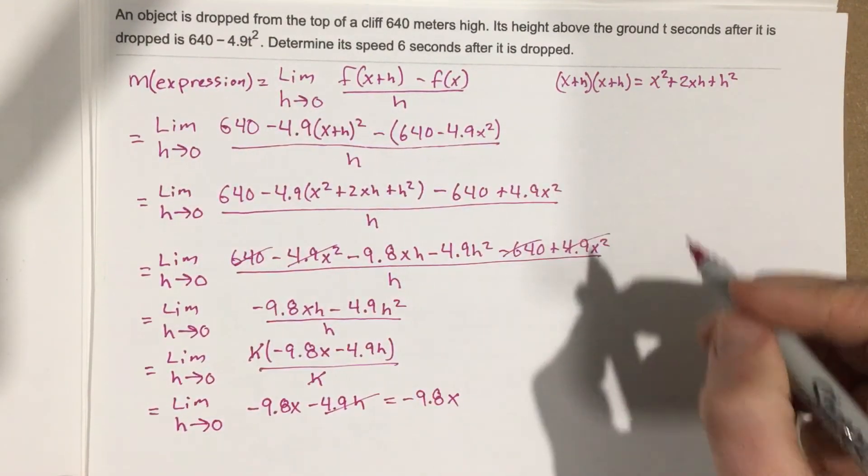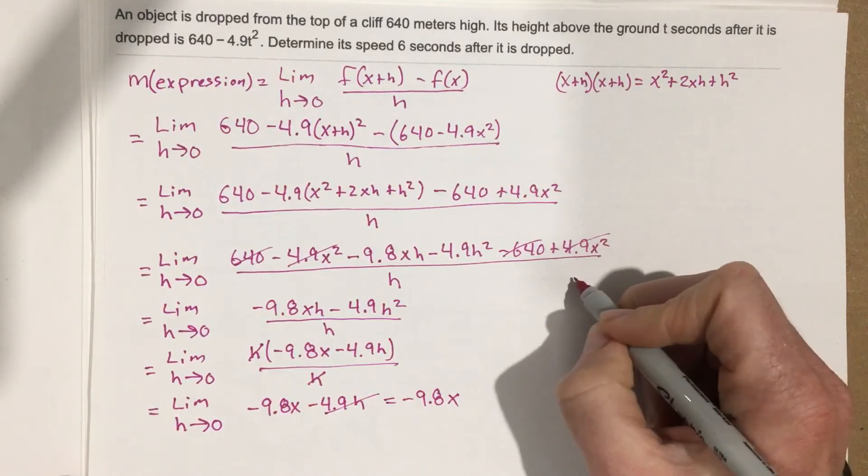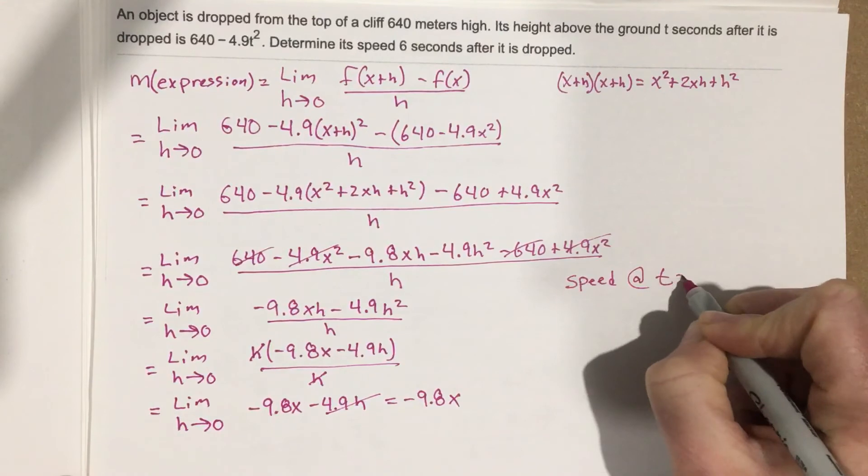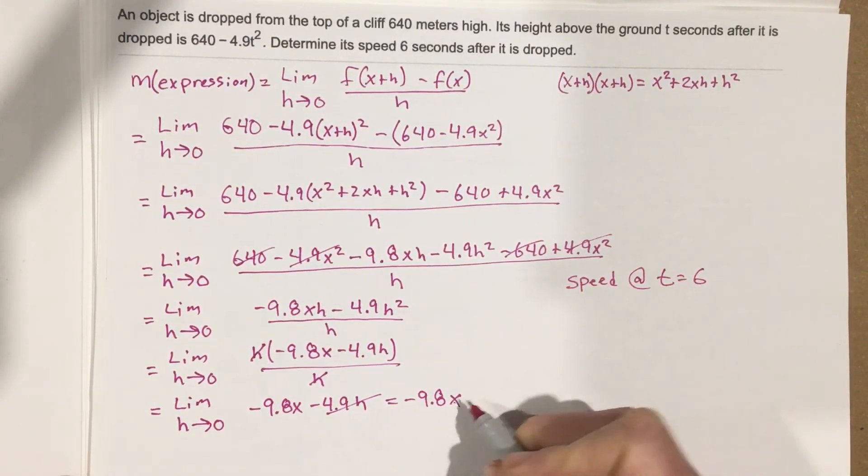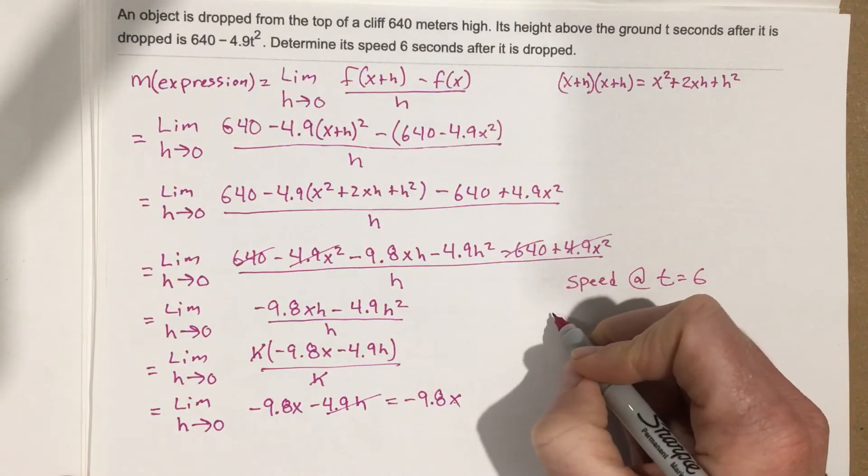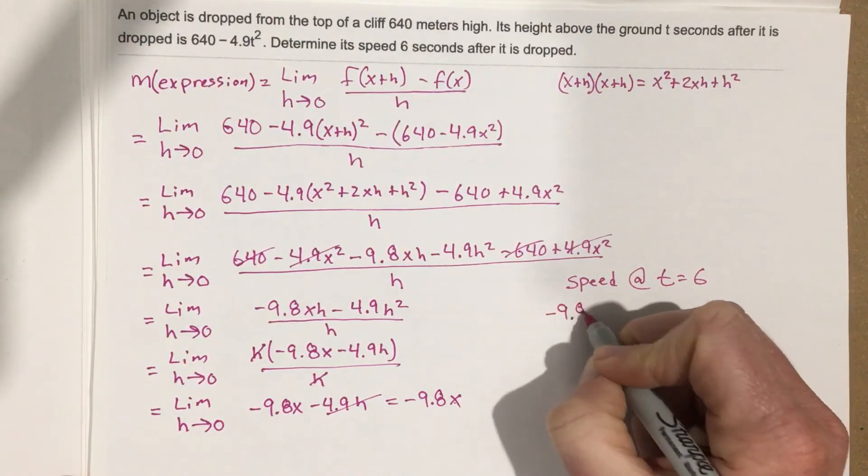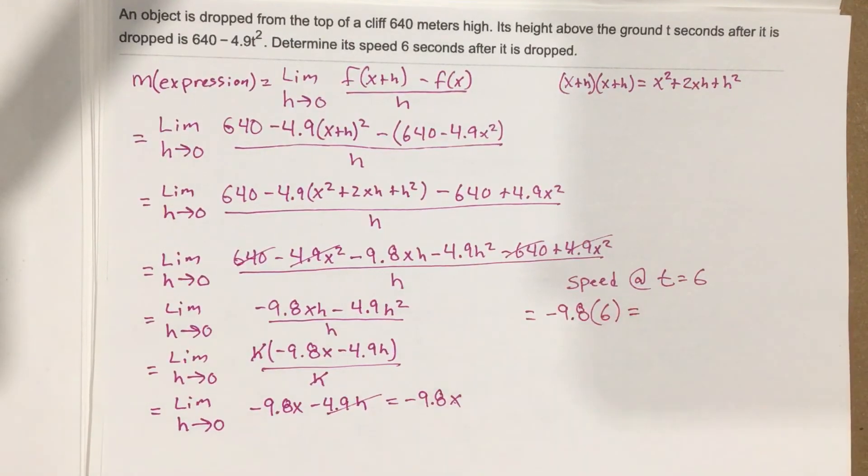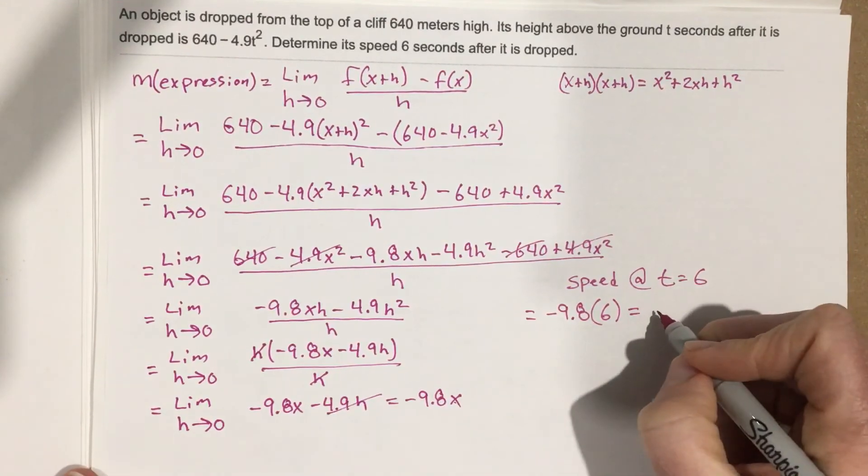We're going to go ahead and say what's the speed at time equals 6. Now remember, this is an x but that is essentially representing t. So we end up with negative 9.8 times 6, which gives you negative 58.8.